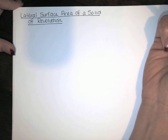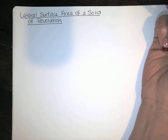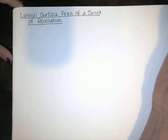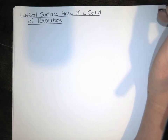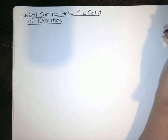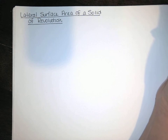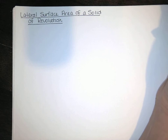In the first lesson of this chapter, we found the area between two curves by breaking it up into n rectangles, finding the area of each rectangle, adding them up, and taking the limit as the number of rectangles went to infinity. Then when we wanted to find the volume of a solid with known cross sections, we found the volume of one slice, added those up, and took the limit as the number of slices went to infinity, giving us an integral.